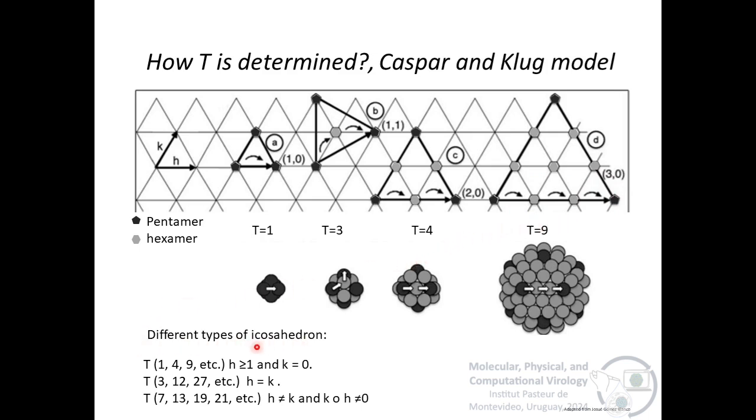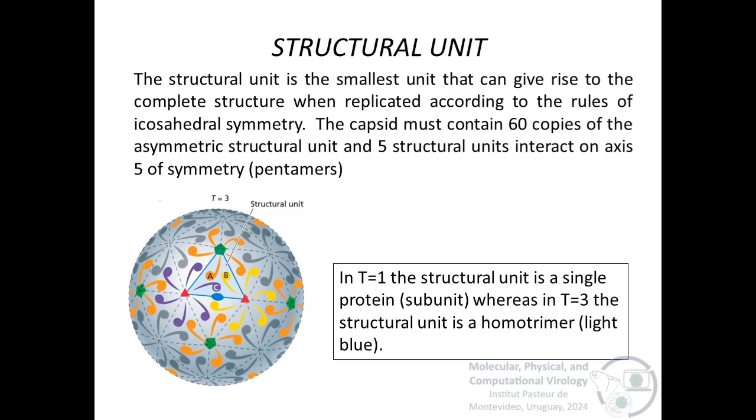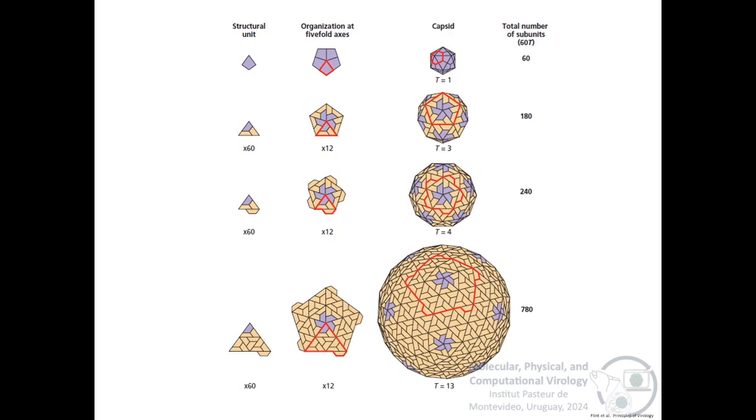There are different types of icosahedra and it is important to note that there are triangulation numbers that are not possible with the model of Caspar and Klug. As I said before, the structural unit is the smaller unit that can give rise to the complete structure when it replicates according to the rules of icosahedral symmetry. In T equals 1, the structural unit is a single protein, the subunit, whereas, for example, in T equals 3, the structural unit is a homotrimer, as you can see in light blue.